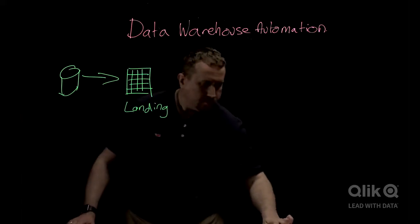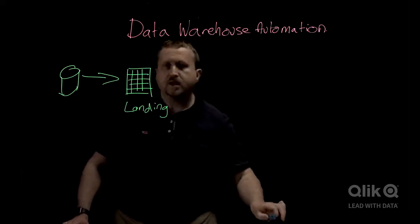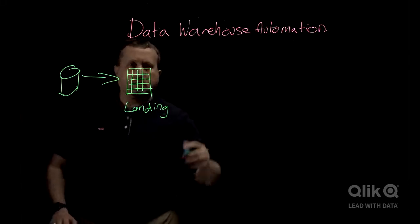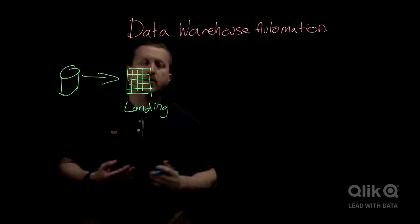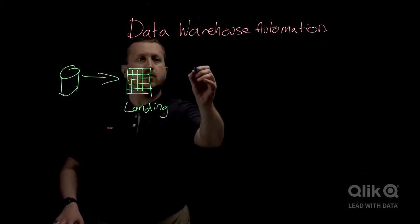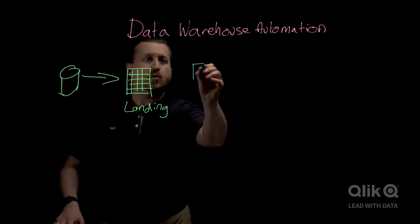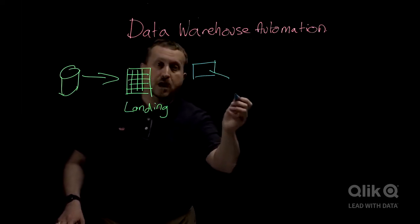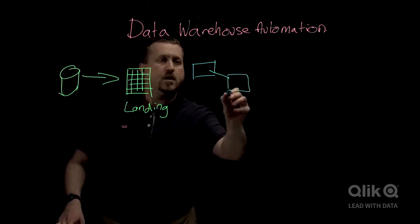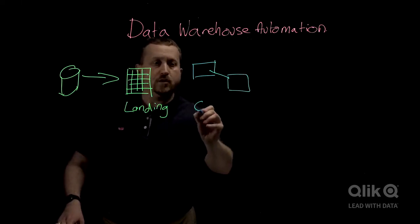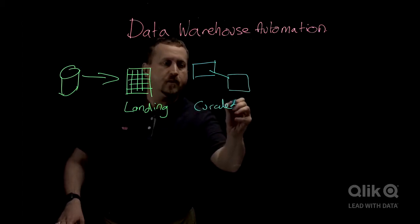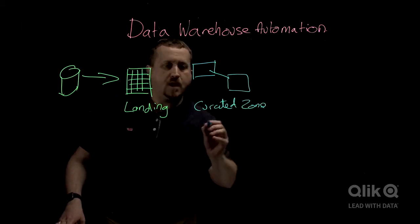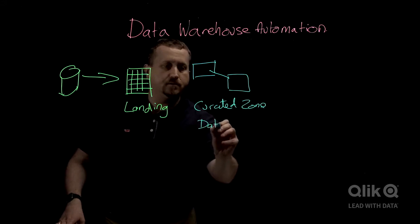The second zone is our curated zone, and that conforms the data to some well-known methodology. So that could be Data Vault, could be Inmon, could be Kimball. So our curated zone — and that's Data Vault.